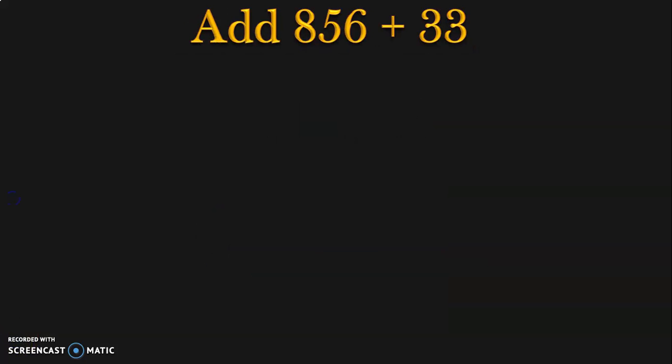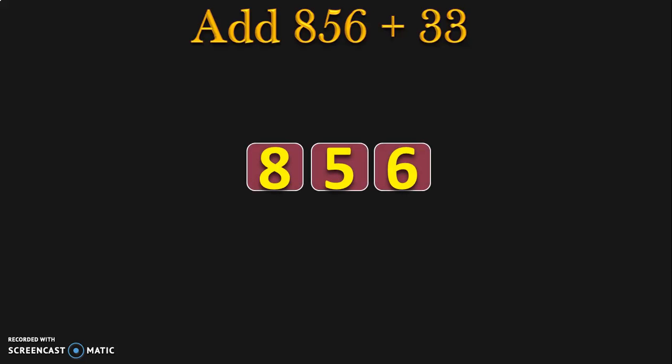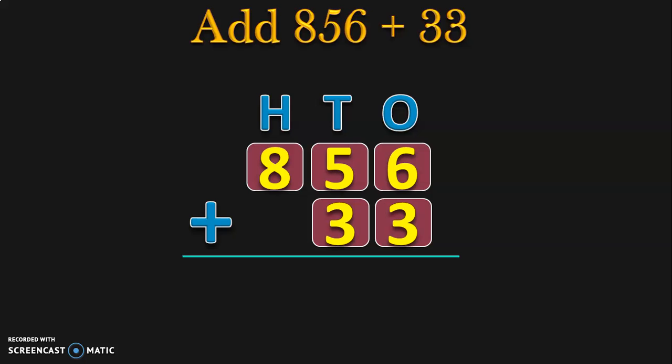Here we have to add 856 plus 33. 856 is a three-digit number and 33 is a two-digit number. First, write down the three-digit number and write down the place values — 1s, 10s, and 100s. This makes it easy to write the number 33 in its correct place. Write down 33 in the 1s place and the 10s place since it is a two-digit number. Begin your addition from the 1s place.